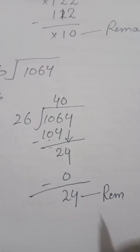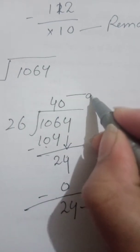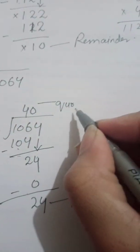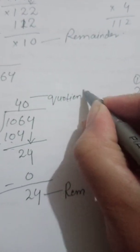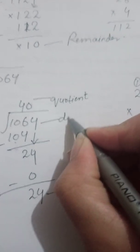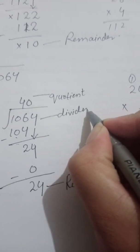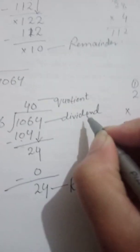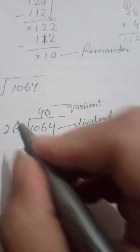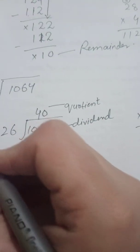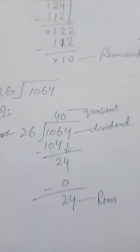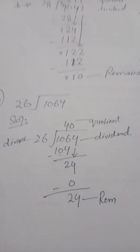So 24 is our remainder, and the number at the top is our quotient. This is the dividend, the answer on top is the quotient, and the outside number is the divisor. You don't need to write these labels with every question — just remember the terms.